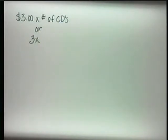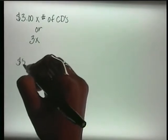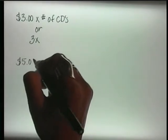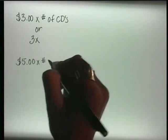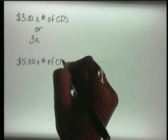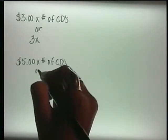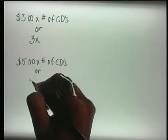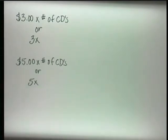How would you write the selling price of any number of CDs knowing that they sold for $5 each? You would write $5 times the number of CDs, or 5x. Again, since we don't know the number of CDs, we'll use the variable x to represent them, so the selling price is symbolized by 5x.